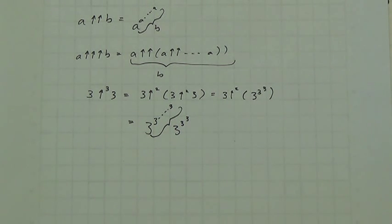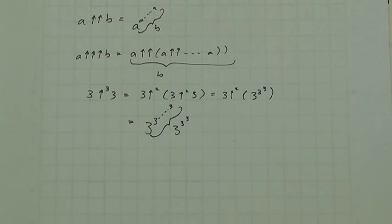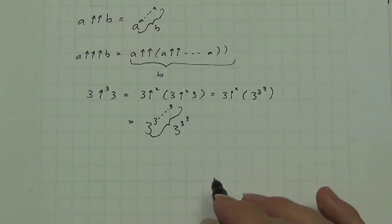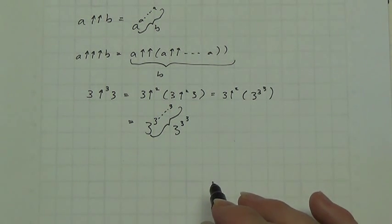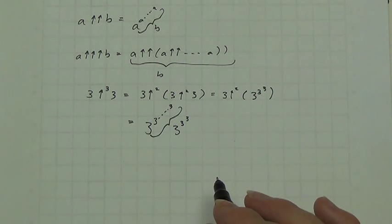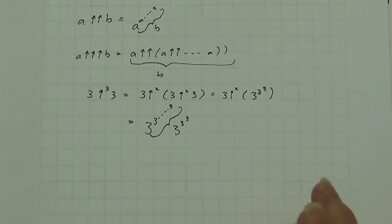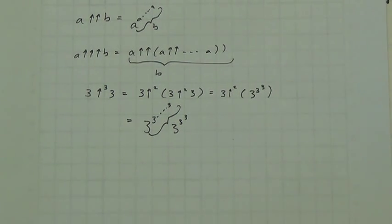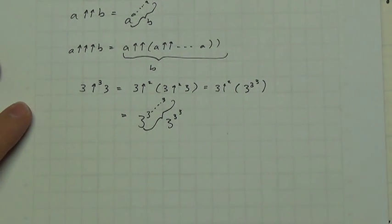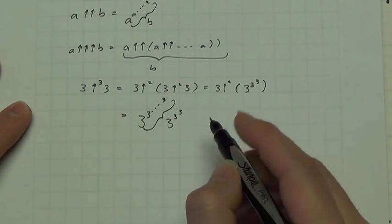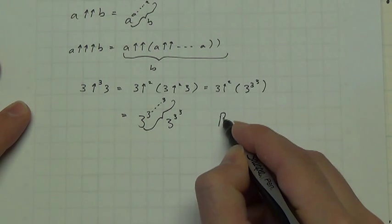Let me tell you a little bit about the largest number — the problem in which the largest number ever used in mathematics was used. It's a problem in what's called Ramsey theory.